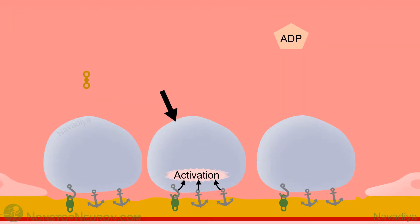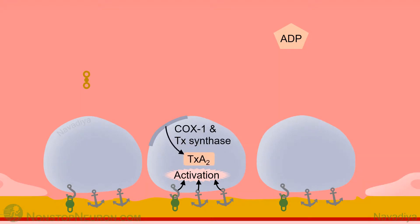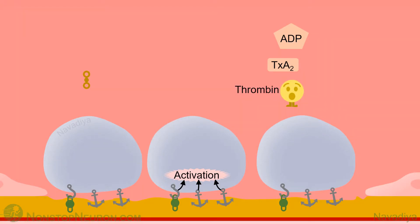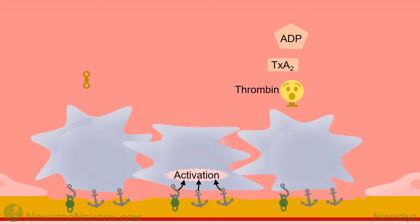Among these, fibrinogen and ADP play important roles in platelet aggregation. First let's complete what else is going on in the activated platelet. From the membrane phospholipid of activated platelets, cyclooxygenase and thromboxane synthase start producing thromboxane A2, which is also released into the blood. Parallel to all this, thrombin is generated on the platelet surface as a result of activation of the coagulation cascade. It also joins ADP and thromboxane A2. Activated platelets also undergo a change in shape, extending finger-like projections which increase their surface area.